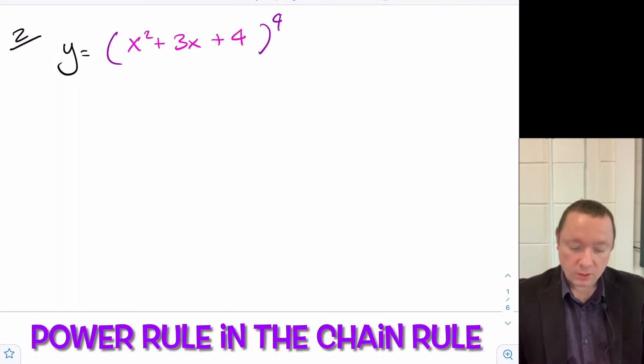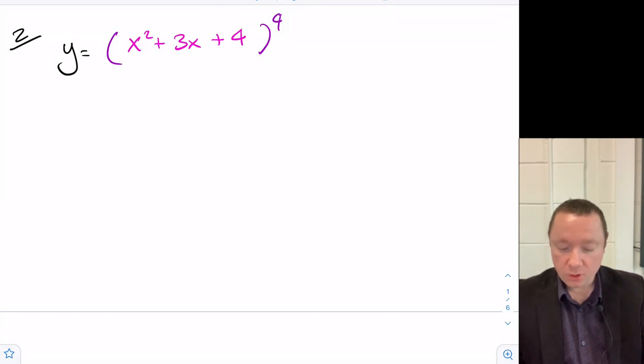Let's look at a second example where it says y equals bracket x squared plus 3x plus 4 all to the power of 4. So our inside function is just this in pink and our outside is all that to the power of 4.